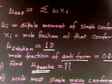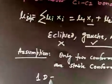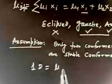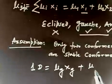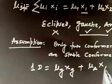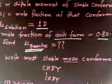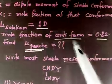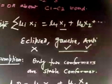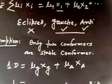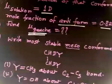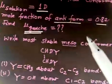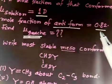Now I can apply the formula. Mu solution is 1 Debye, so: 1 Debye = mu_gauche times x_gauche plus mu_anti times x_anti. Mu solution is given, and x_anti is 0.82, so I know x_anti equals 0.82.